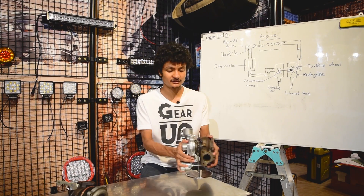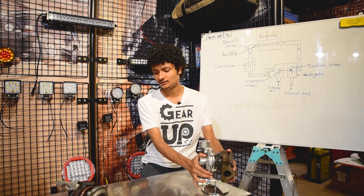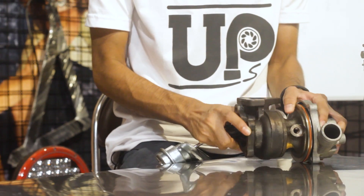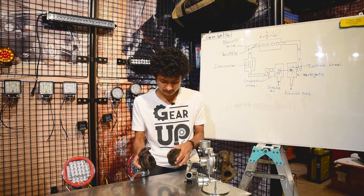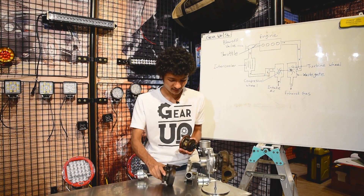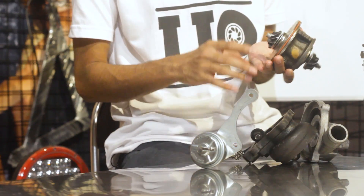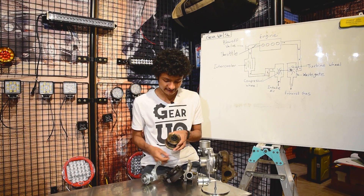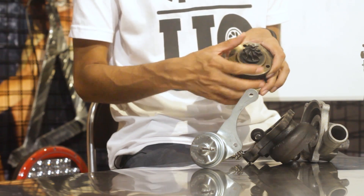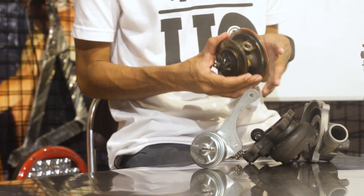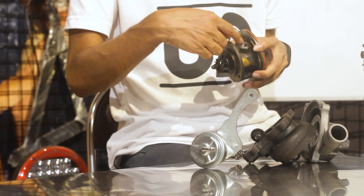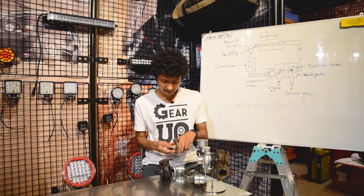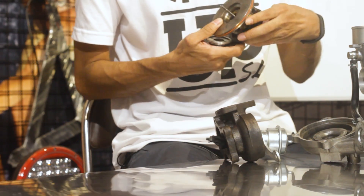There are other parts of the engine. You can use the compressor wheel. There is a turbine wheel, oil, outlet, and a common shaft.